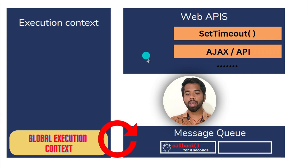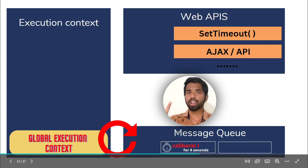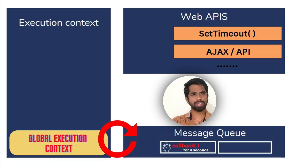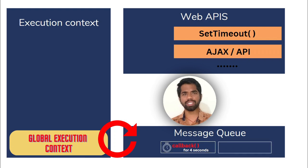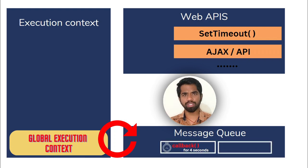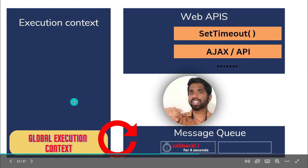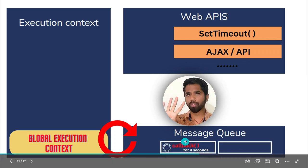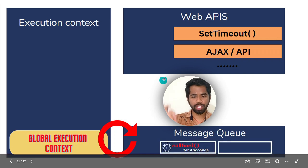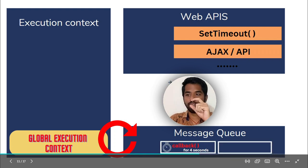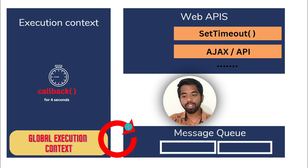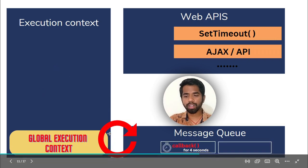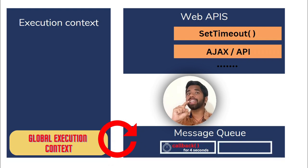After 4 seconds, we go to the queue — I put it in the line. You already know about stacks — data structures, last in first out. So for function one's callback, after 4 seconds I put it in the queue. The event loop checks: if the execution context stack is empty, it takes the callback from the queue and pushes it into the execution context.